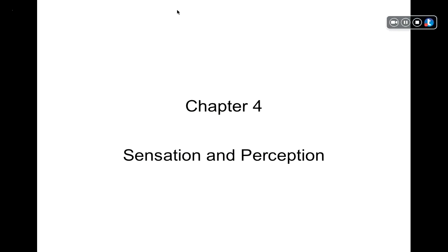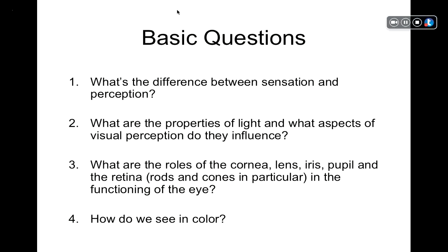Chapter 4: Sensation and Perception. Basic questions we're going to be addressing in Lecture 1: What's the difference between sensation and perception? What are the properties of light, and what aspects of visual perception do they influence? What are the roles of the cornea, lens, iris, pupil, and the retina? Rods and cones in the functioning of the eye. And then, how do we see in color?